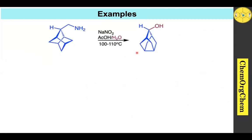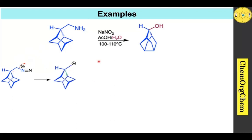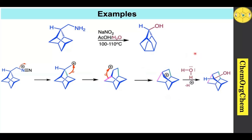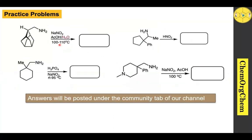In our final example, unlike previous cases where only one alkyl shift occurred followed by trapping of the carbocation by water, in this particular case two sequential alkyl shifts take place to give the final rearranged alcohol product. Mechanistically: when treated with sodium nitrate, acetic acid, and water, the compound quickly provides the corresponding diazonium ion, which loses nitrogen gas to give the carbocation. The first bond migrates to the carbocation center, generating a new carbocation; then a second alkyl shift occurs as another bond migrates to that carbocation center, generating yet another carbocation, which is readily trapped by water to give the corresponding alcohol product. This unusual double rearrangement can be explained by the relative stability of the final product.